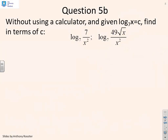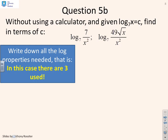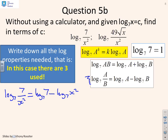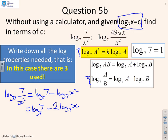A similar question to reinforce the point. Write down all the log properties you think you might need — the power function, that log 7 of 7 is 1, and the product and quotient rules. Now log 7 of 7 over x squared, using the quotient rule, is log 7 of 7 minus log 7 of x squared. Then using the power rule because I've got an x squared, this becomes log 7 of 7 minus 2 log 7 of x. Using log 7 of 7 equals 1 and log 7 of x equals c, you get 1 minus 2c.